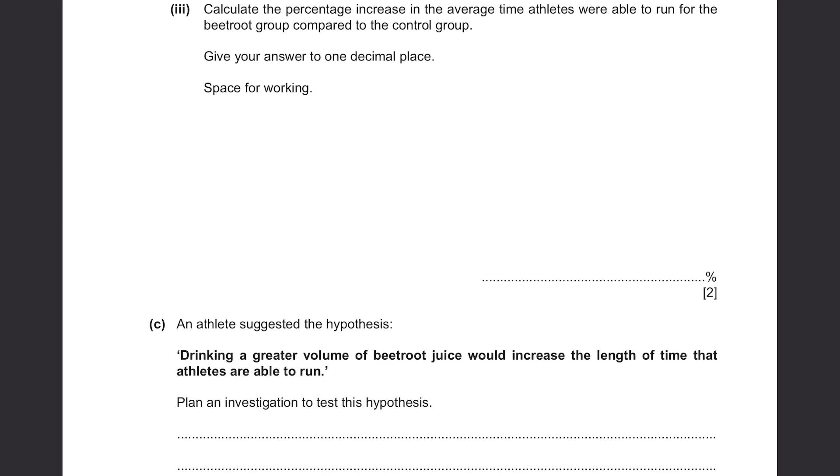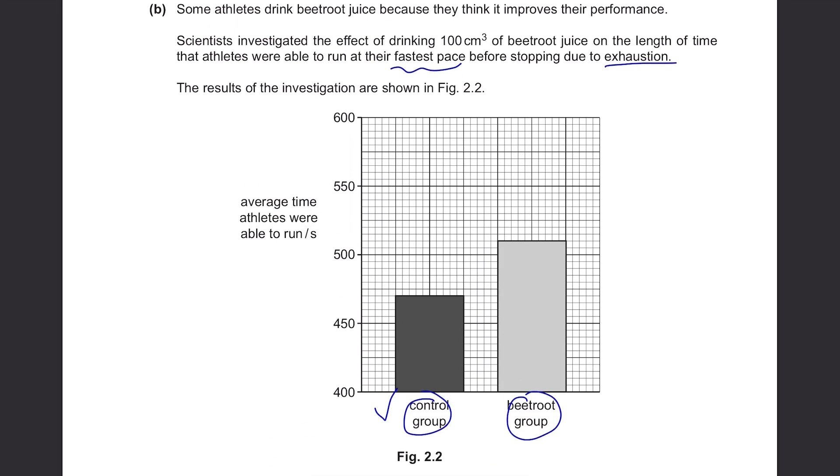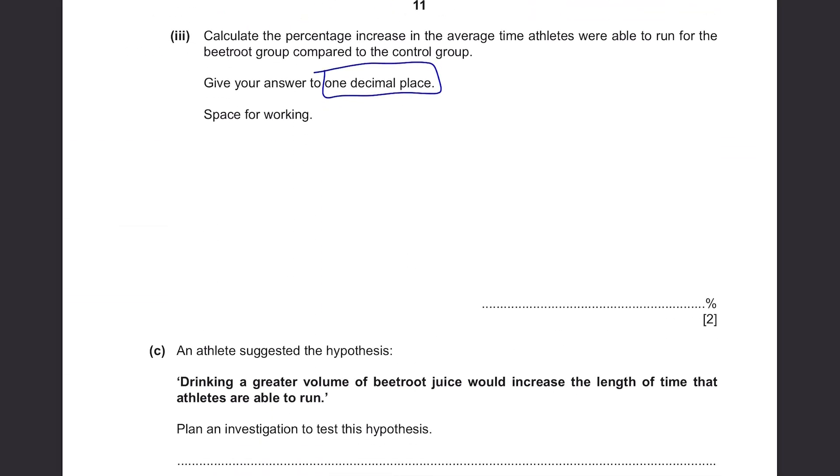Calculate the percentage increase in the average time athletes were able to run for the beetroot group compared to the control group. Give your answer to one decimal place. The percentage increase, well for the control group, they were able to run for 470 seconds and for the beetroot group, they ran for 510 seconds. So to calculate the percentage increase, it should be 510 minus 470 over 470 times 100. It's 8.5%, correct to one decimal place. So it's like the difference between the two figures, divided by the initial value, and multiplied with 100.